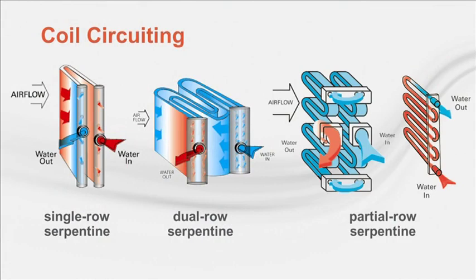Partial row serpentine circuiting, also known as fractional circuiting, feeds only some of the tubes in the coil row, which allows for increased water velocity. This design is typically used more for heating coils. Changing the circuiting can drastically change water velocity and heat transfer characteristics. Tailoring the coil geometry to achieve a desired water velocity can help minimize the negative impacts of either too high or too low velocity.